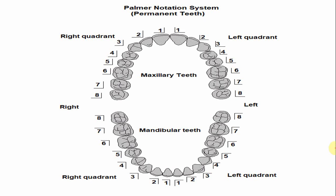In the Palmer notation system, the number of both mandibular second molars is seven. The difference is the symbol used: one symbol indicates it is a mandibular tooth of the left side, and the other symbol indicates it is a mandibular tooth of the right side. The number itself is the same — seven.